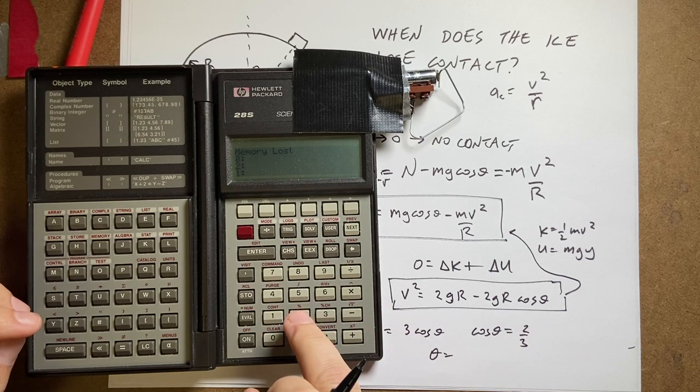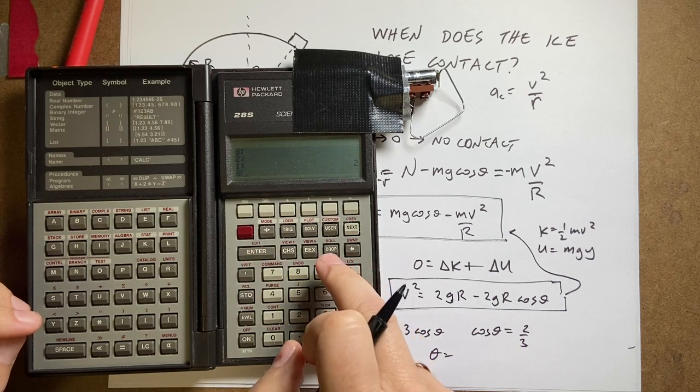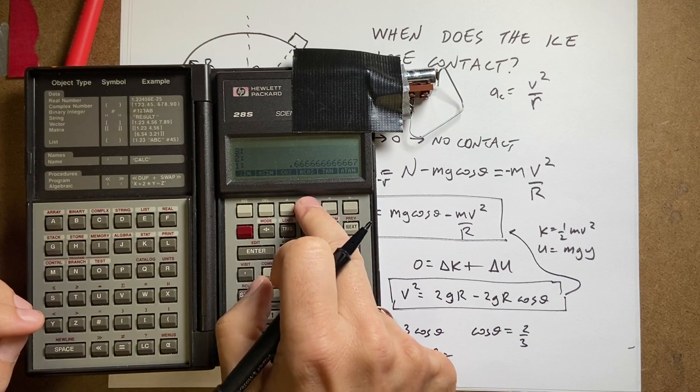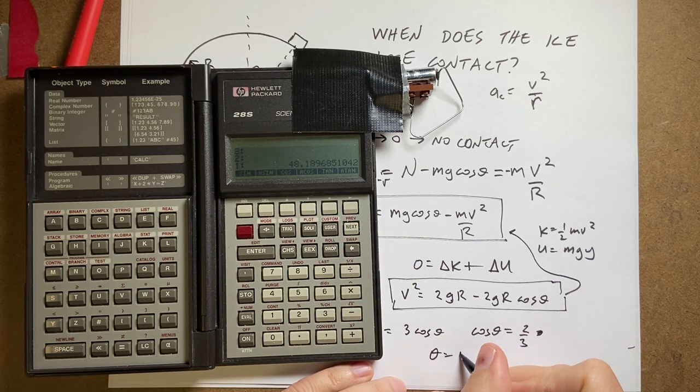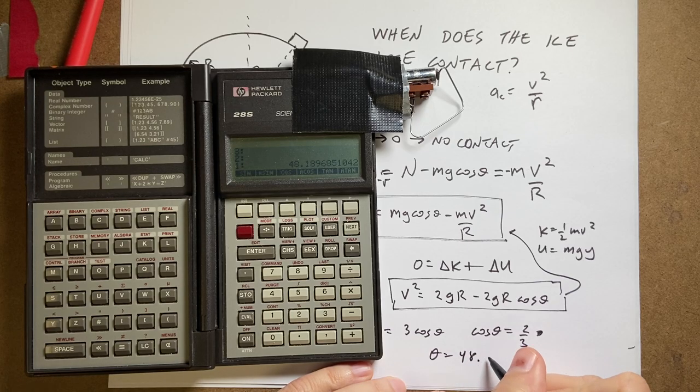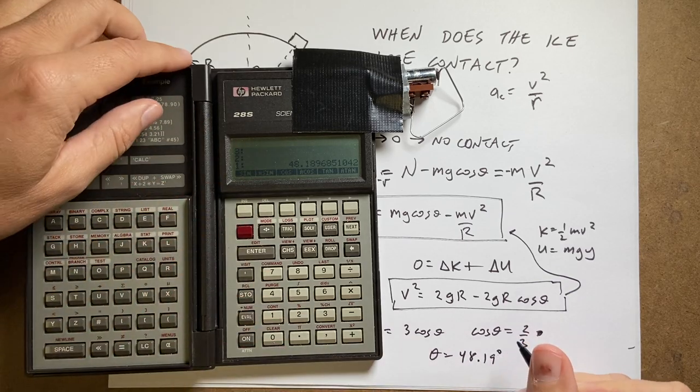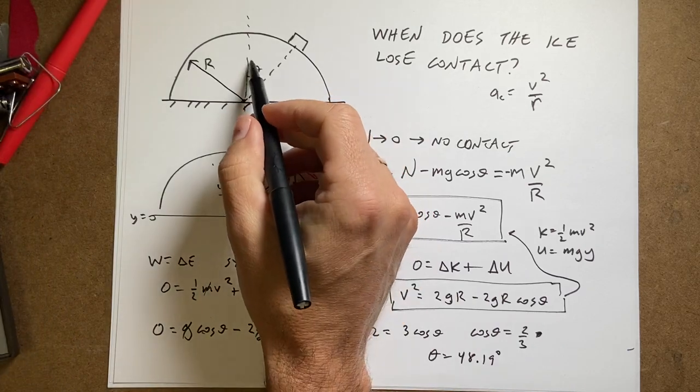And I'm going to do 2 thirds, 2 enter 3, divided by trig, inverse cosine. I get theta equals 48.19 degrees. And that's the angle from the top. So that's where it loses contact.